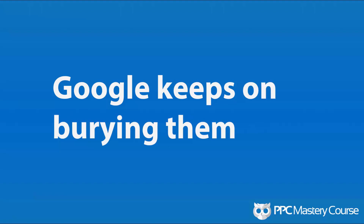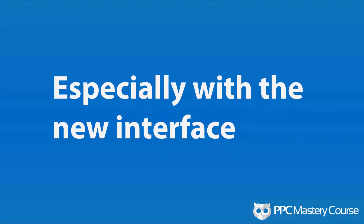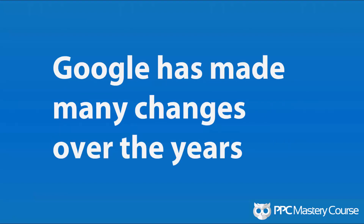Here's the deal: Google keeps changing quality scores, keeps burying them from your display. They give you information, then they take away that information. Basically, Google giveth and Google taketh — and this is especially true in the new AdWords interface. Google has made many changes over the years to quality scores: they add things, they take things away. They even took down the Hal Varian video from the internet that shows how quality scores, ad rank, and the ad discounter work.